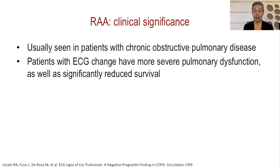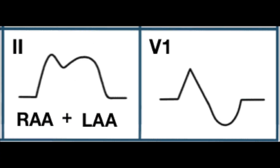Right atrial abnormality is seen in severe pulmonary dysfunction, atrial septal defect, right ventricular abnormality, and pulmonary hypertension — for example due to pulmonary embolism. In patients with chronic lung disease, the presence of right atrial abnormality, similar to LAA, portends more severe disease and predicts reduced survival. If a patient has biatrial abnormality — meaning both right and left — it will be a combination of those changes: P waves will be peaked and wide, and in V1 will be peaked with a deep terminal deflection.